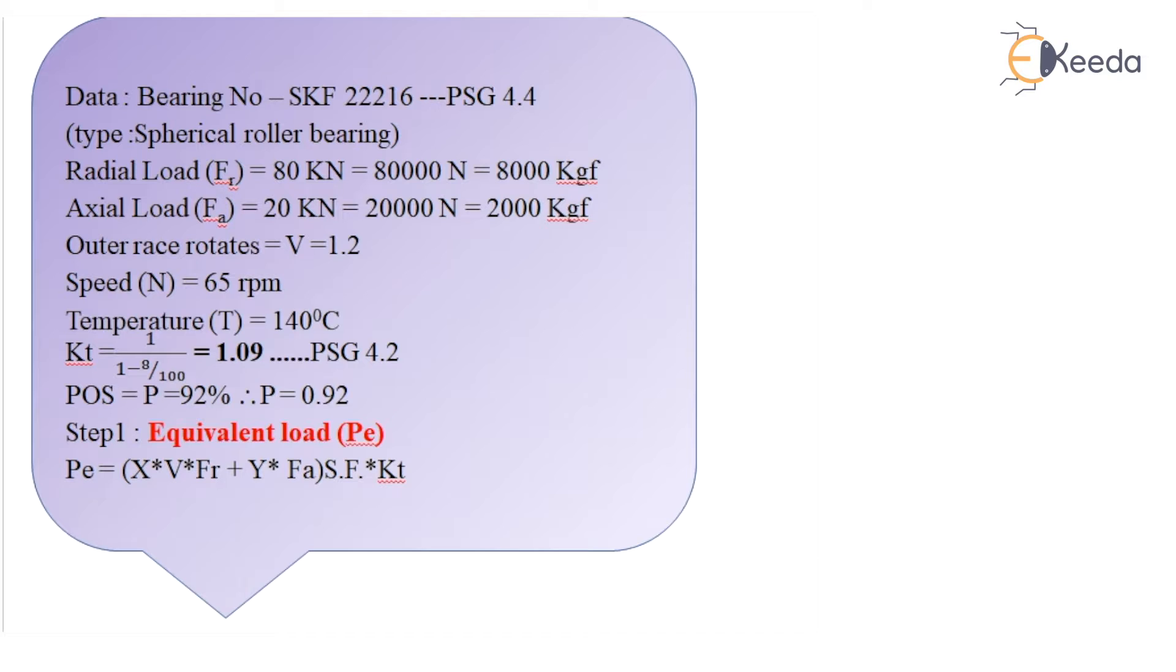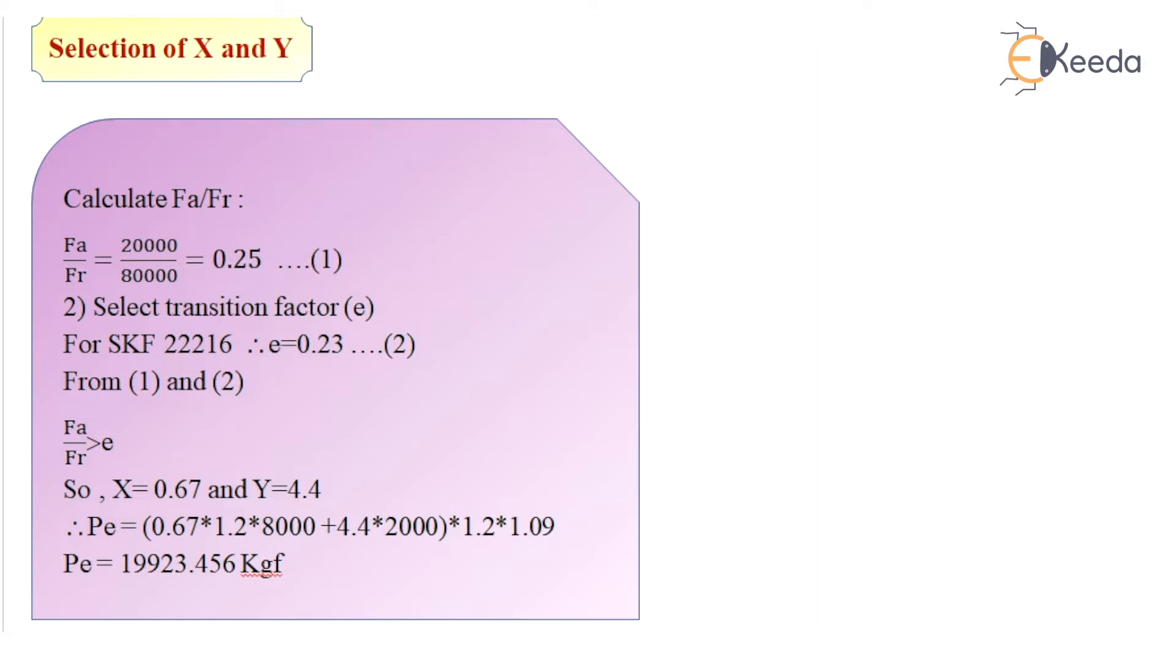So let us first of all find out equivalent load, that is Pe. So Pe is given as X·V·FR + Y·FA whole multiplied by SF·KT. So for selecting the value of X and Y, calculate FA/FR. So if I find out the ratio of FA and FR, I get the value as 0.25.